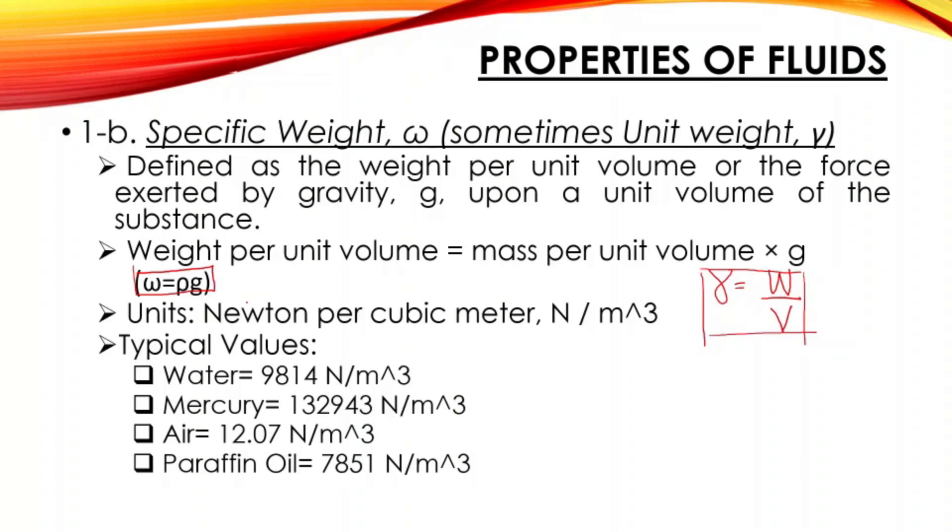The normal units in SI is newton per cubic meter. If you use US customary, then that is pound force per cubic foot. That is the normal value for unit weight. Typical values: for water, 9814 N/m³; mercury, 132,943 N/m³; air, 12.07 N/m³; paraffin oil, 7851 N/m³.